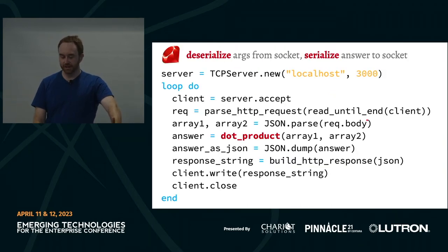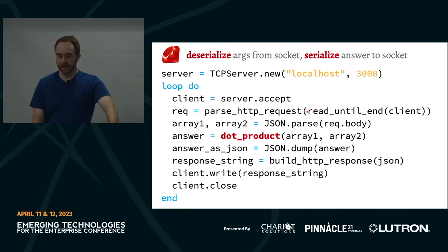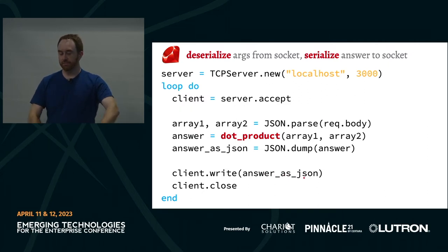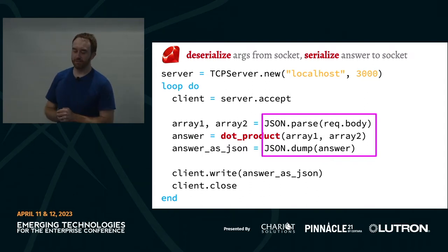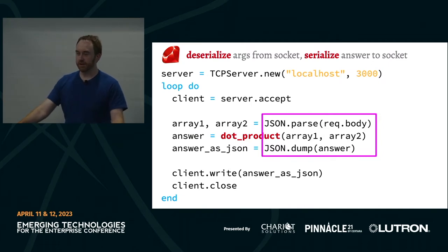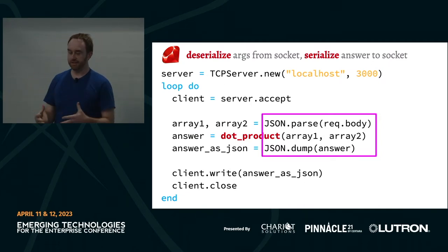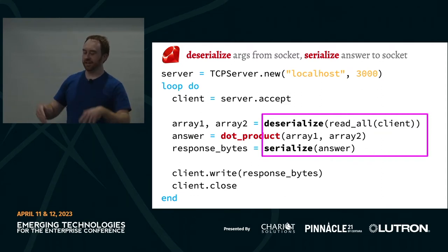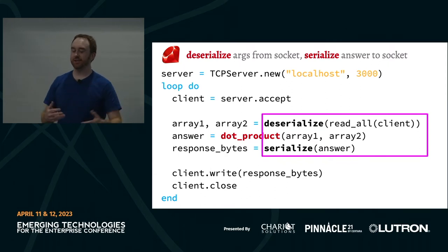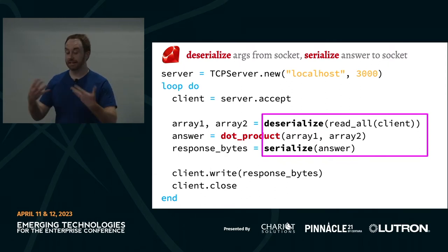On the Ruby side, we get rid of all the HTTP parsing and response building — we just need JSON.parse and JSON.dump. This is still a potential improvement area because JSON isn't the most compact format for representing numbers. We can do better by using a binary encoding instead of turning numbers into strings, so we can deserialize and serialize more efficiently.